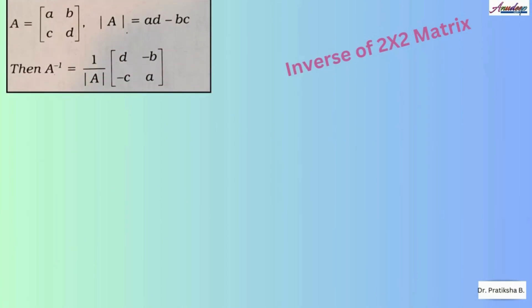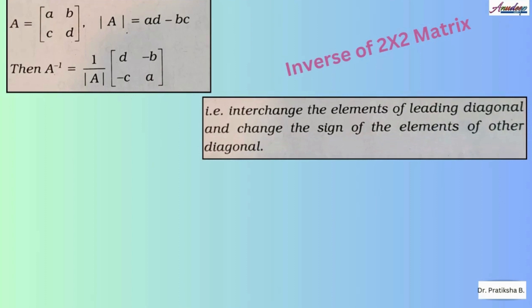Inverse of a 2x2 matrix — if you have been given a 2x2 dimension matrix, there is a direct formula you can make use of. If A is a matrix with elements a, b, c, and d, then the determinant of A is ad minus bc, and A inverse is directly obtained by 1 upon determinant of A, multiplied by [d, -b; -c, a]. That is, we simply interchange the elements of the leading diagonal — so a and d interchange positions — and for the remaining elements, you simply attach a negative sign.